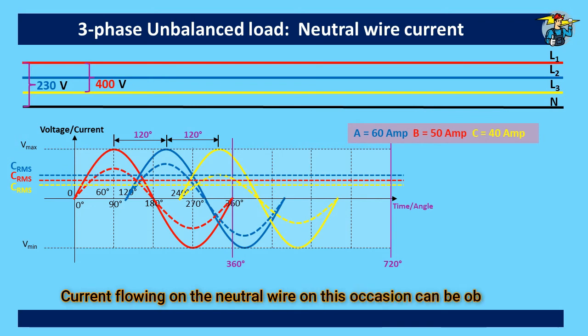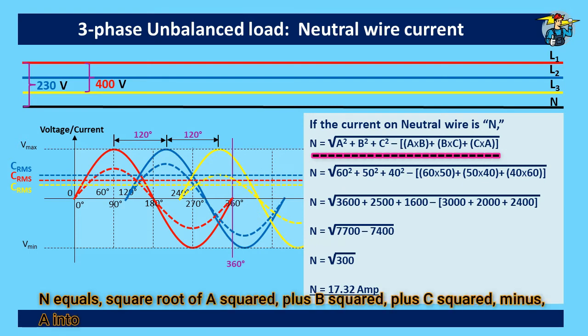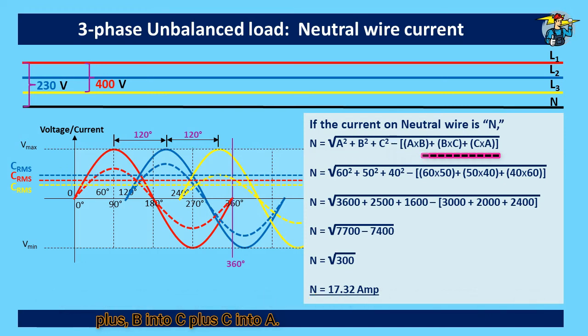Current flowing on the neutral wire on this occasion can be obtained from the given equation: N equals square root of A squared plus B squared plus C squared minus A into B plus B into C plus C into A.